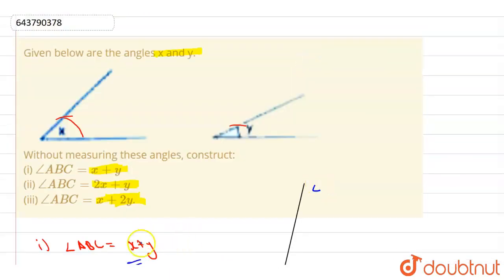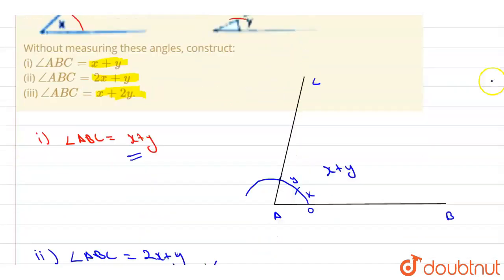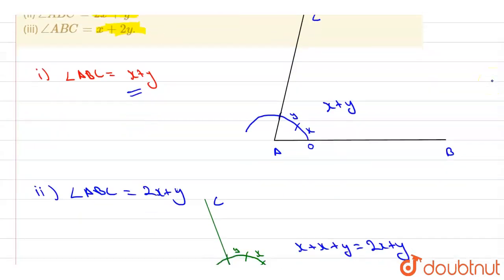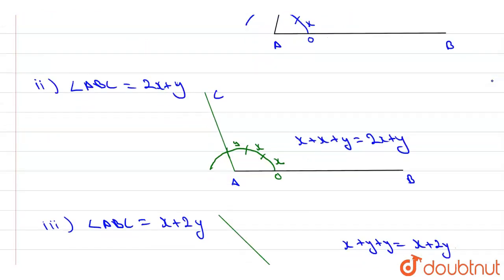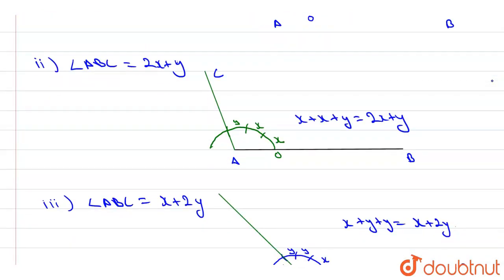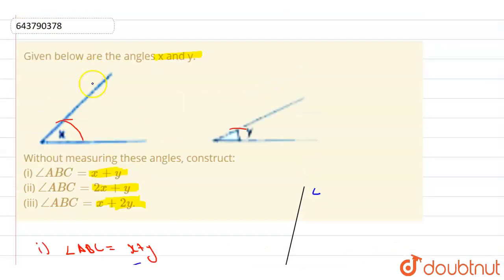Hence we have made all three required angles without measuring. We didn't know the exact values of x and y, but we successfully constructed all three: x plus y, 2x plus y, and x plus 2y.